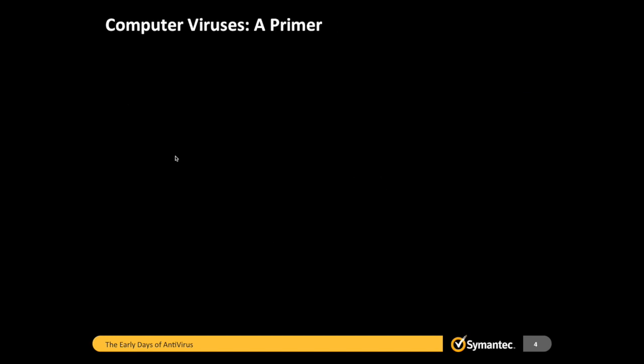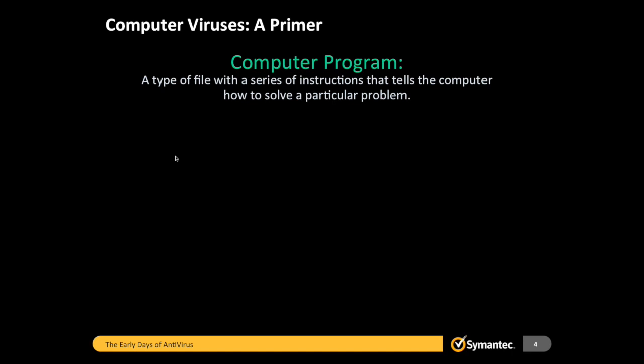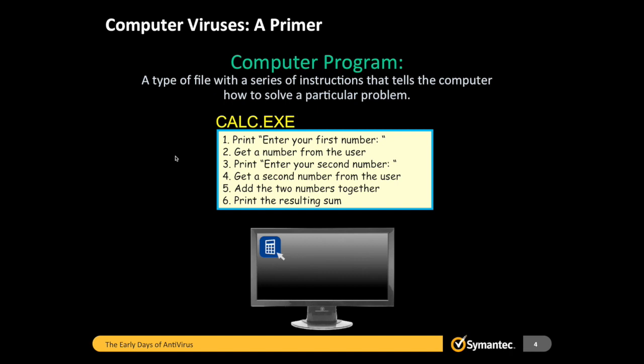What is a computer virus? First, let's start with a backgrounder on what a computer program is — not a virus, but a normal program. A normal computer program, like Word for Windows, Excel, or your favorite video game, is a type of file with a series of instructions that tells a computer how to solve a particular problem. If you had a calculator program, the software instructions might look like this — obviously a simplification, but this will help you understand how a computer program actually works.